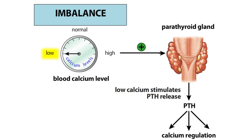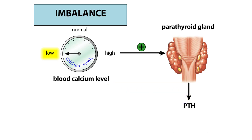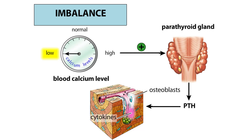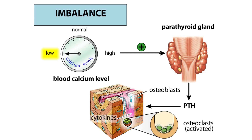Parathyroid hormone acts in a number of ways to increase blood calcium. Like calcitonin, PTH targets bone cells. PTH binds first to osteoblasts, causing them to release cytokines. The cytokines increase both the number and activity of osteoclasts, thereby enhancing bone turnover. Overall, there is a net loss of bone and a rise in blood calcium levels.